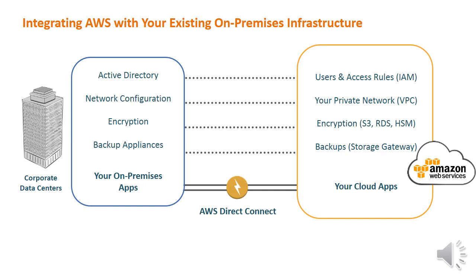Integration components include Active Directory, network configuration, encryption, and backup applications for cloud applications. User and access rules are managed via IAM. Private networks use VPC. Encryption covers S3, RDS, and HSM. Backups are handled through the Storage Gateway for your cloud apps.